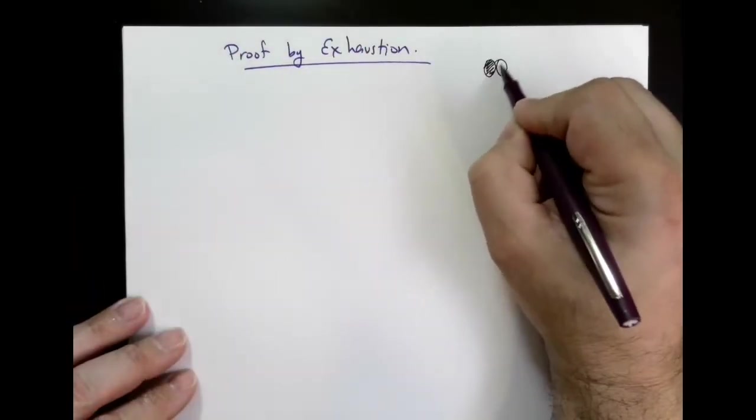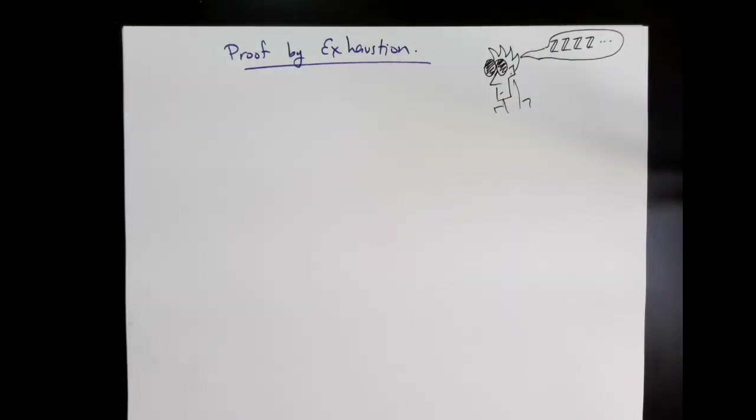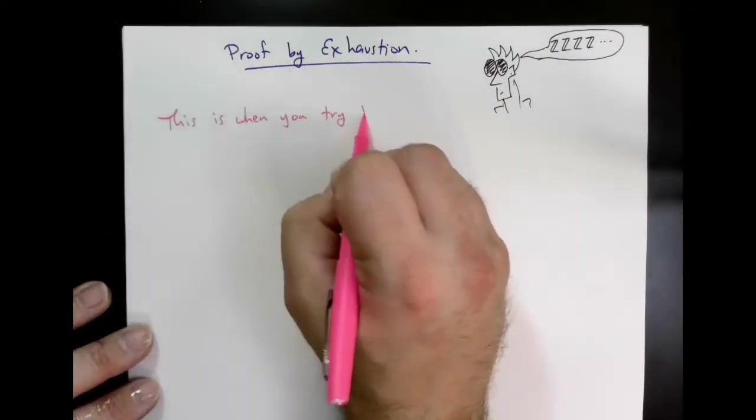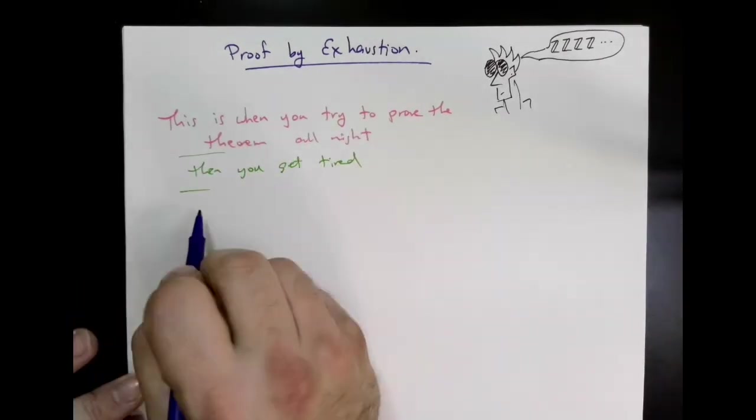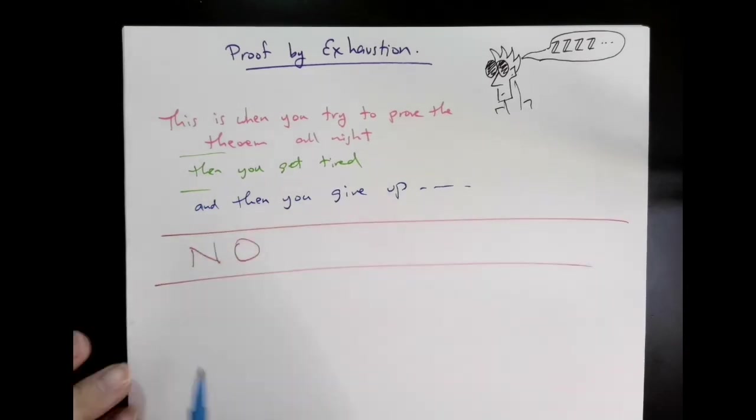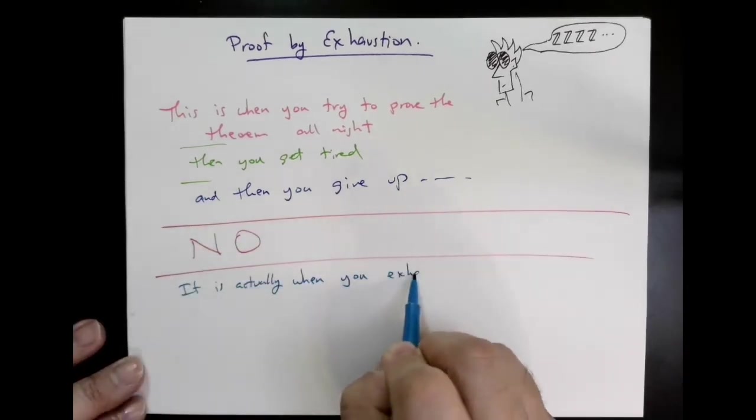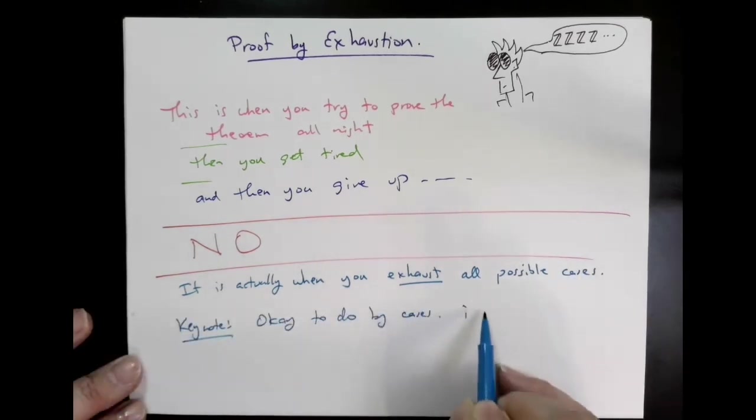The second one is proof by exhaustion. And of course we know that it's given this name because you try and try to prove it until you're exhausted and you give up. So now it is not that. Proof by exhaustion is also called proof by cases but I like the name proof by exhaustion a bit better because that name carries the key idea. You can break things up into cases as long as your cases cover everything.